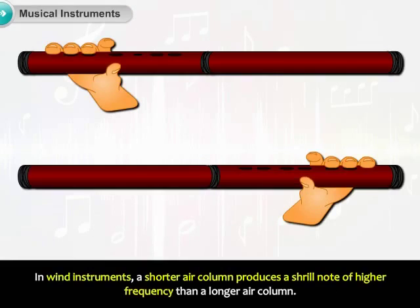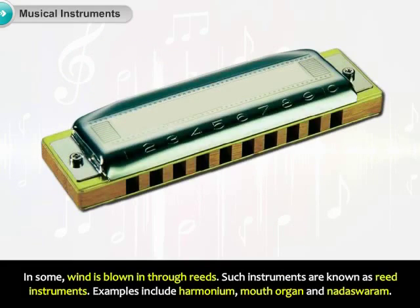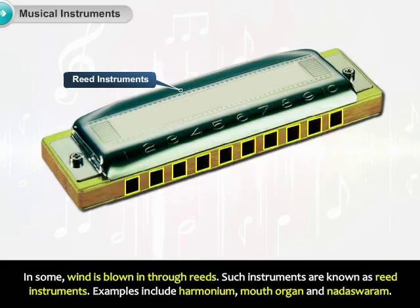In wind instruments, a shorter air column produces a shrill note of higher frequency than a longer air column. In some wind instruments, wind is blown in through reeds. Such instruments are known as reed instruments.